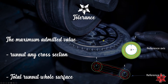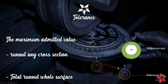As for the tolerance, the maximum admitted value for the runout is at any cross section. The reference axis is shown here, and the tolerance zone is this green area where the actual element can rotate around the axis. For total runout, the tolerance applies to the whole surface. The actual element may rotate around the reference axis within the tolerance zone — as shown by the green cylinders.